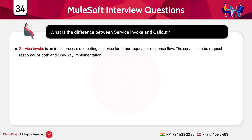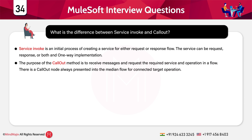What is the difference between service invoke and call out? Service invoke is an initial process of creating a service for either a request or response flow — the service can be request-response, one-way, or both, and multiple instances can be permitted in a flow. Call out, on the other hand, receives messages and requests the required service and operation in a flow. There is always a call out node in the mediation flow. If the call attempt is successful, the call out node in the response flow begins receiving messages. If unsuccessful, the call out node retries the service depending on the type of fault that occurred.